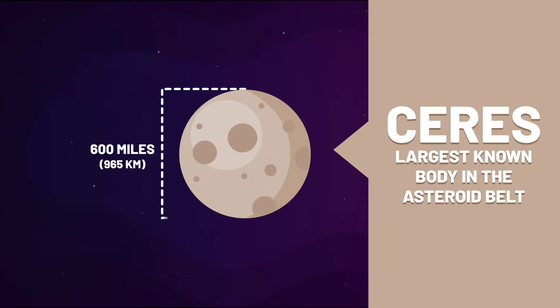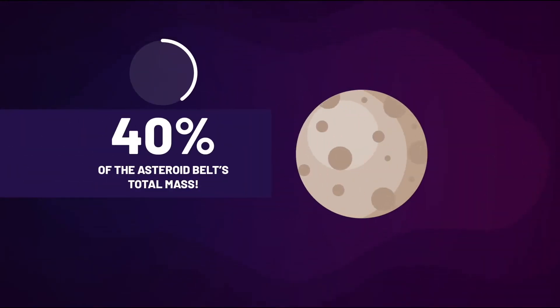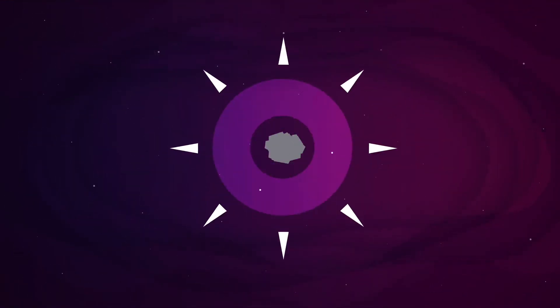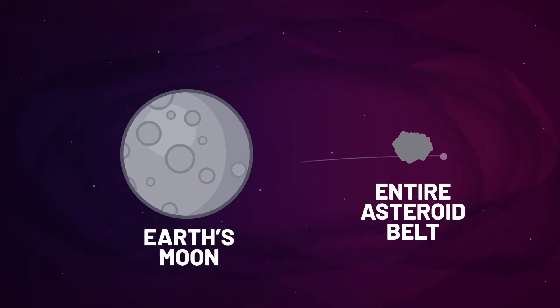Ceres alone also makes up nearly 40% of the belt's entire mass. But don't be fooled. Even if you clumped every last piece in the asteroid belt together, it would only amount to a body far less massive than Earth's moon.